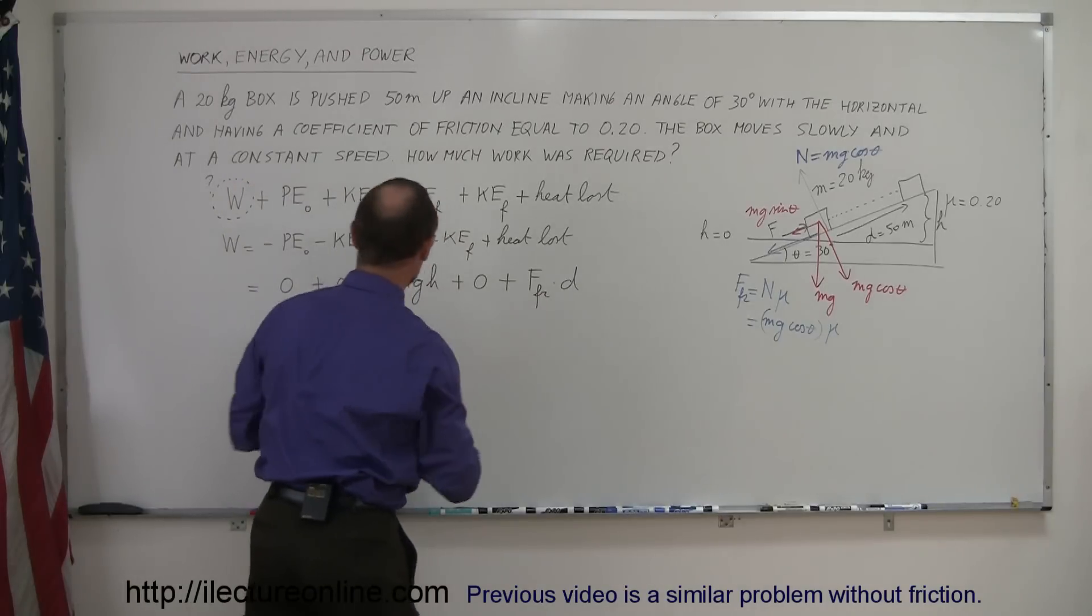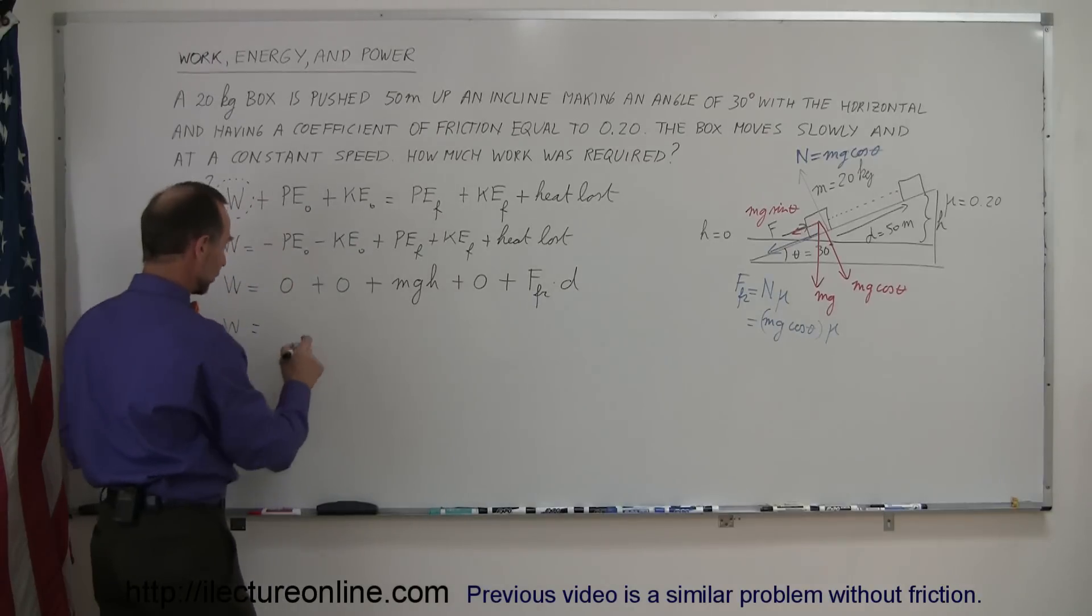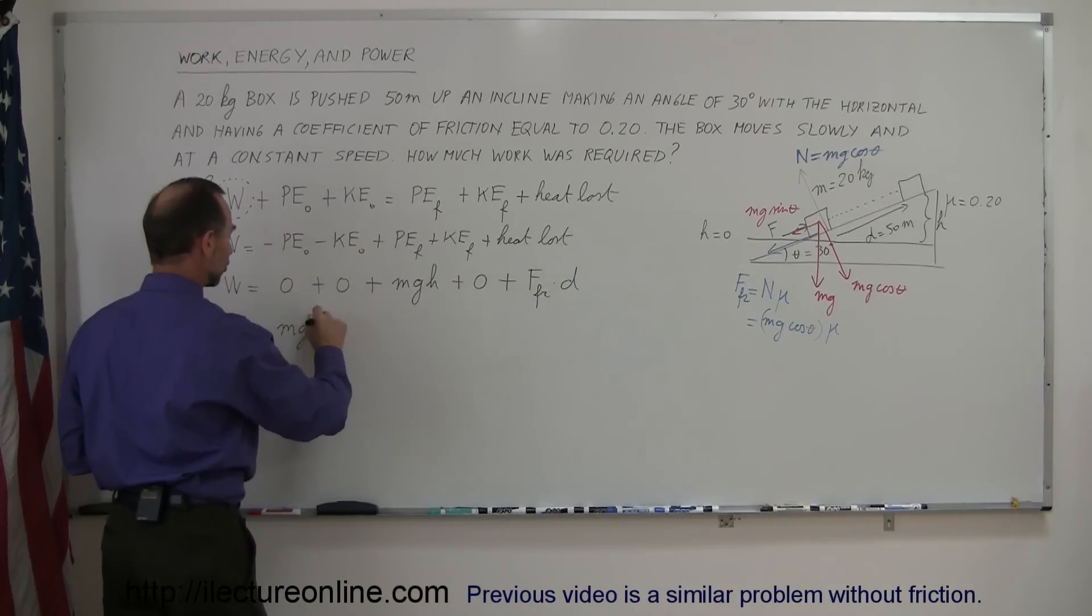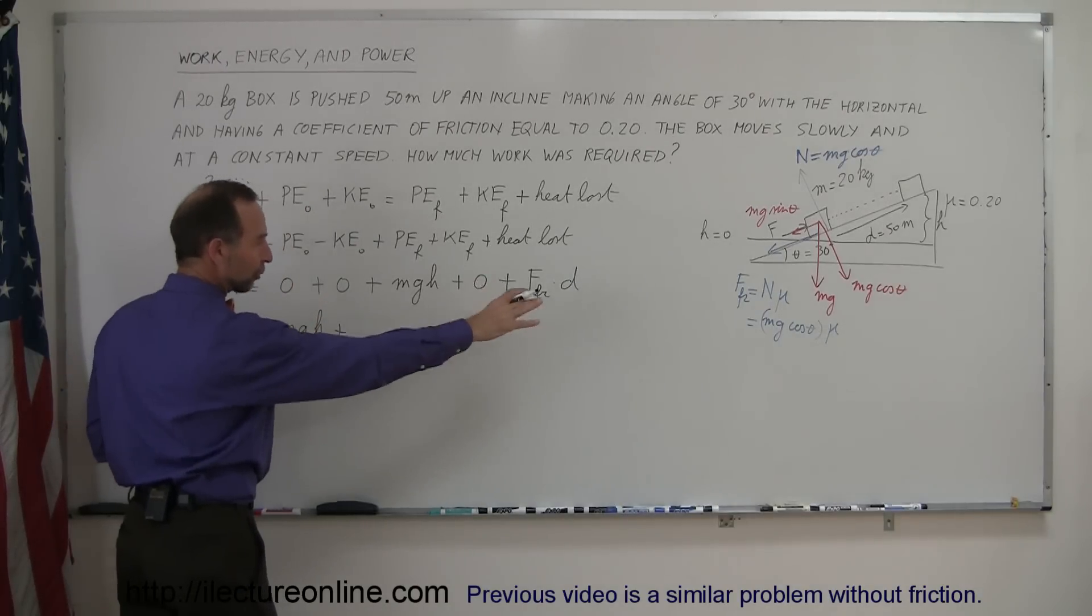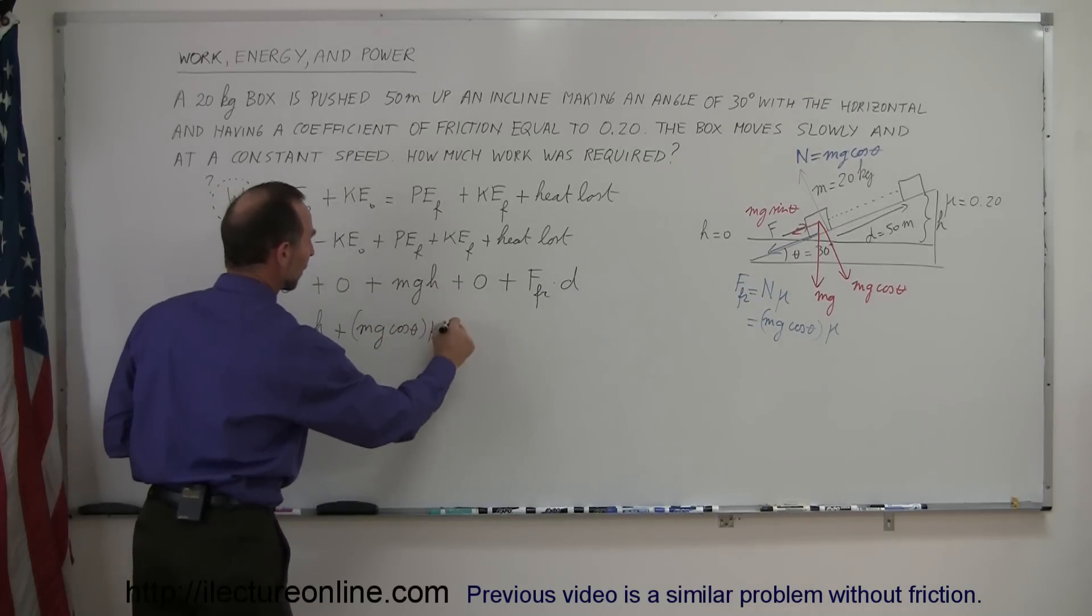We can now plug that in here, so we can say that the work done is equal to, we have a bunch of zeros, so let's ignore those. We have the MgH plus the friction force, which we determined to be Mg cosine theta times mu, and then we multiply that times d.